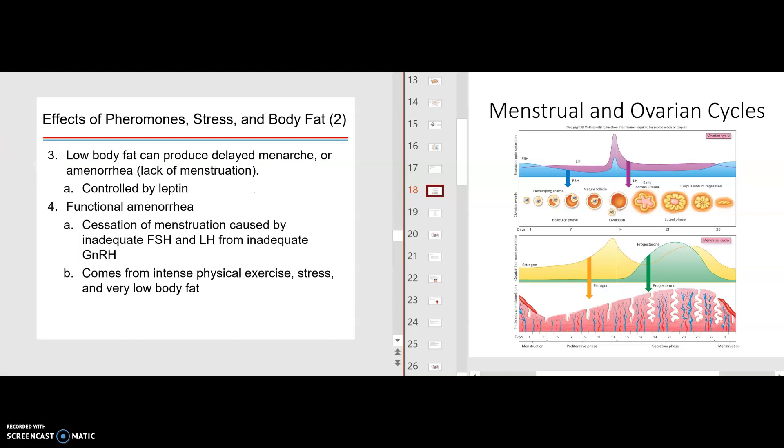Low body fat. It has to do with leptins. It has to do with enzymes within the fat tissue, one being an aromatase. Then you can have a functional amenorrhea. A functional disorder is one in which you actually cannot find an anatomical defect, but it does produce symptomatology and cessation of menses caused by inadequate FSH and LH from inadequate gonadotrophin-releasing hormone. It can come from intense physical exercise, stress, and very low body fat.